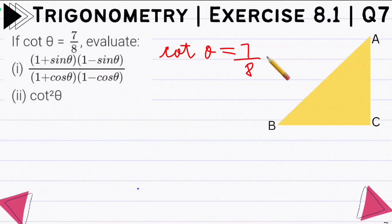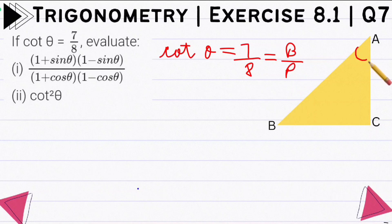Cot theta is given as B by P, or base by perpendicular. If we take this triangle and take the angle A as theta, then the perpendicular side will be BC and base will be AC, and the hypotenuse is always the longest side. So cot theta is equal to 7 by 8 — this is the ratio.